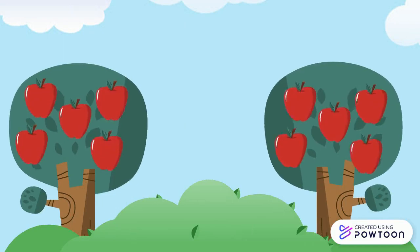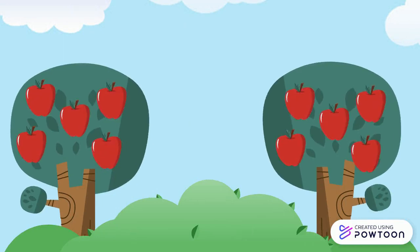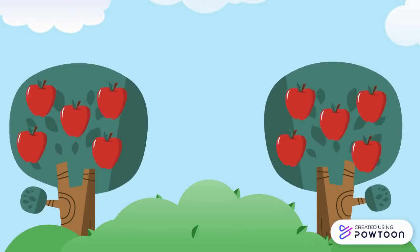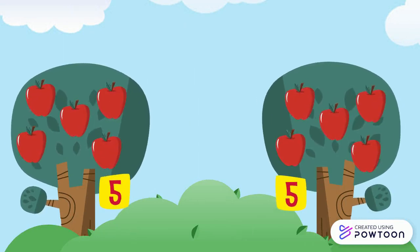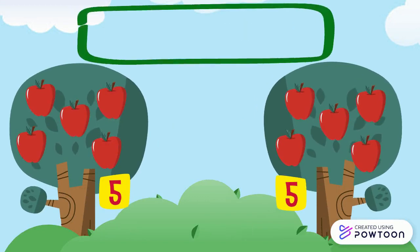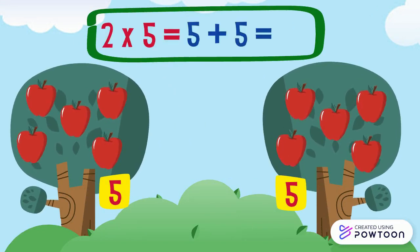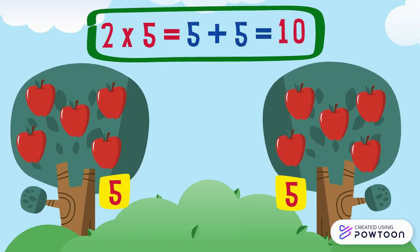There are two apple trees. Each tree carries five apples. The total number of apples is 2 times 5 equals 5 plus 5 equals 10. So 2 times 5 equals 10.